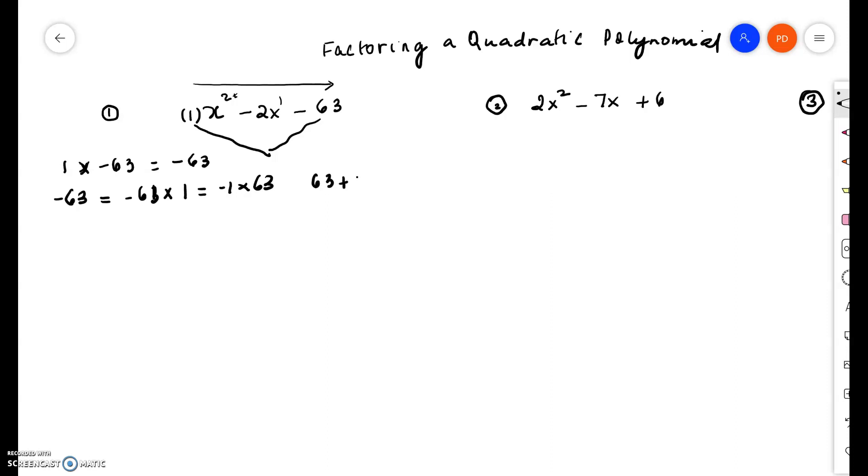for example, if I add up the 63 and the negative 1, I get 62. But remember that I want the 2 to add up to negative 2. So we have negative 63 again. Let us think of other factors.